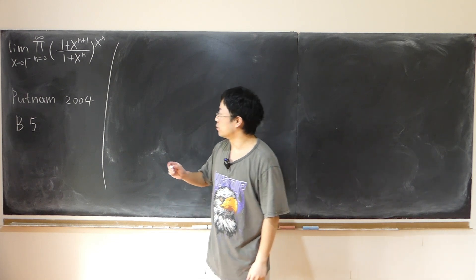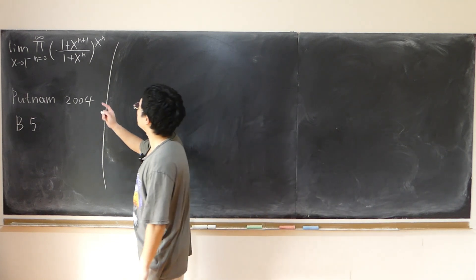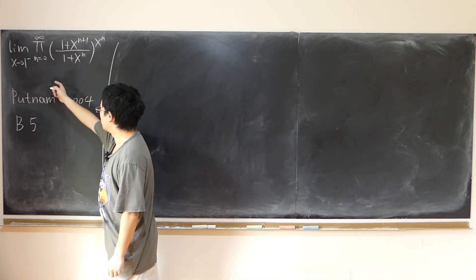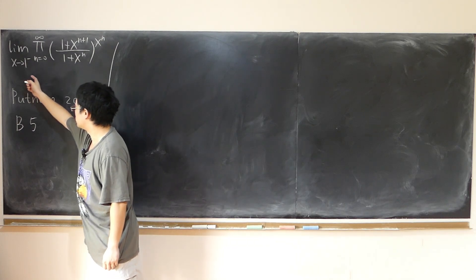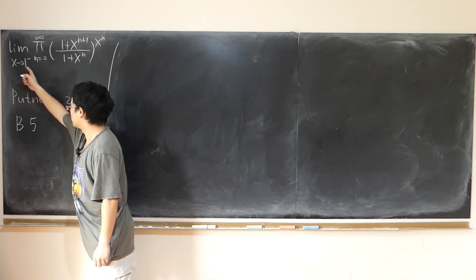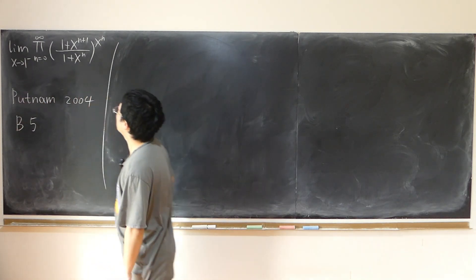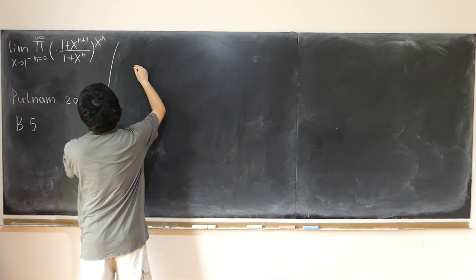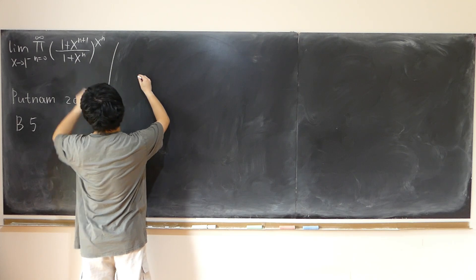We're trying to solve this limit. First, we have an infinite product. Then we let x approach 1 from the left-hand side. First, partial sum, partial product.